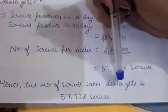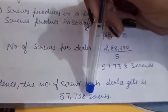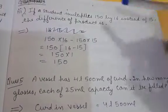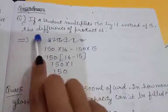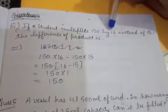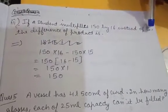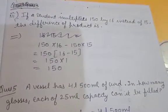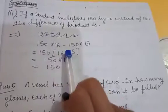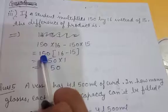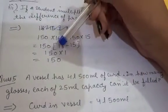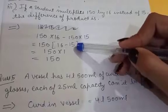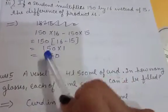Each dealer gets 57,738 screws. Now move to question 3: if a student multiplies 150 by 16 instead of 15, what is the difference of the product? We take 150 as a common factor: 150 × 16 minus 150 × 15 = 150 × (16 − 15) = 150 × 1 = 150. The difference is 150.